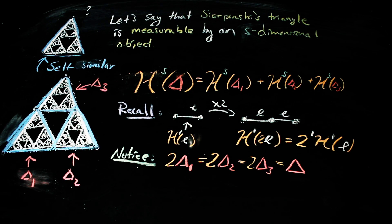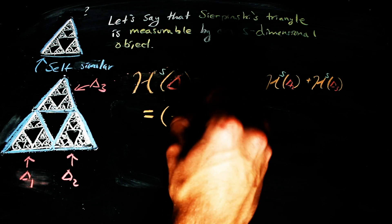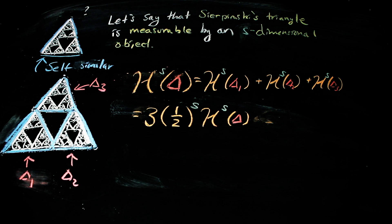So, each of the measures of these three smaller triangles is one-half to the S times the measure of the entire Sierpinski's triangle. In other words, we can get a smaller triangle by scaling the entire Sierpinski's triangle by half.